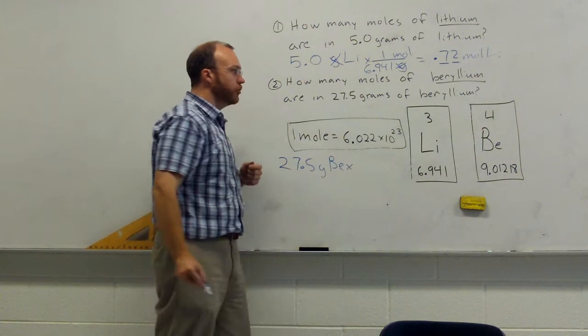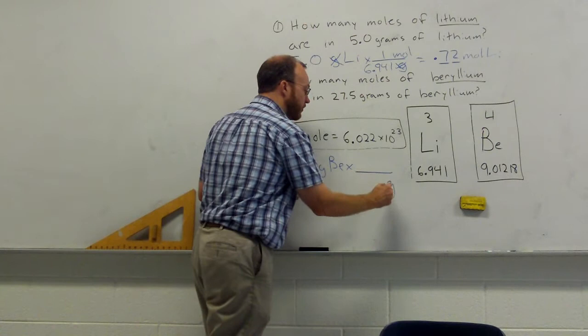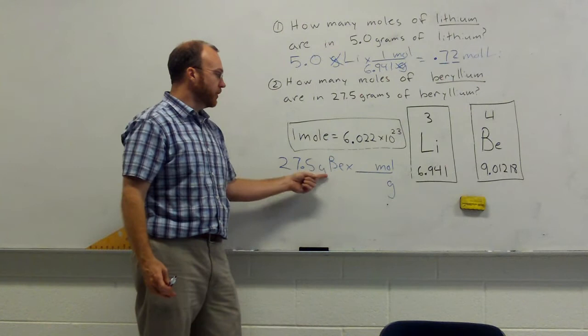27.5 grams of beryllium. Think about what you want to find. Now, we want to find moles. So, we want to get rid of grams and we want to get moles. So, to find how to go from grams to moles for beryllium, we go to our periodic table.